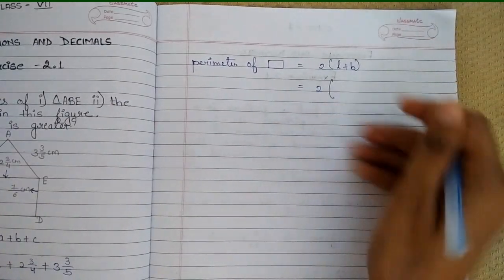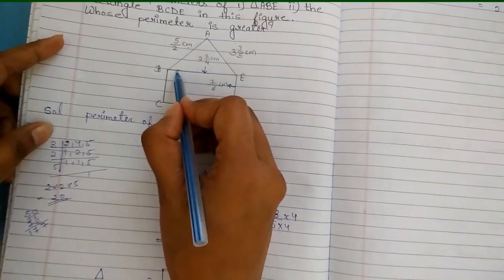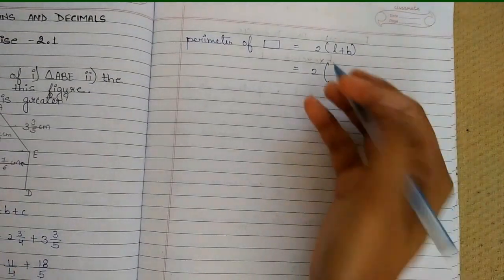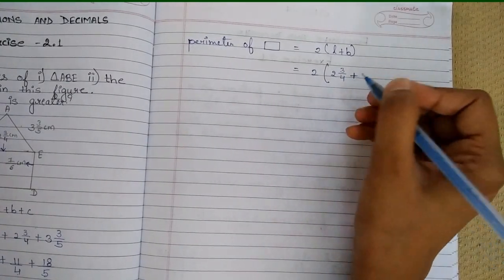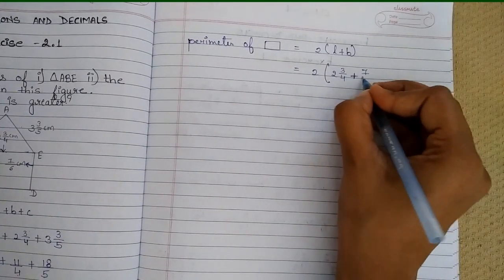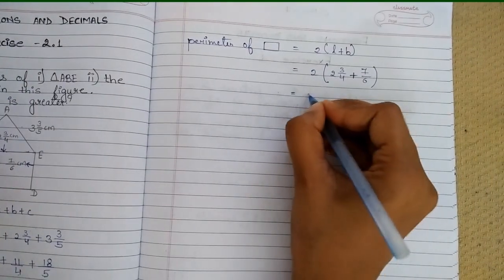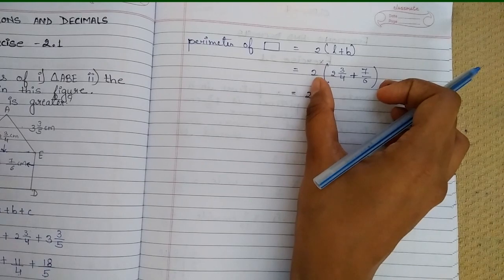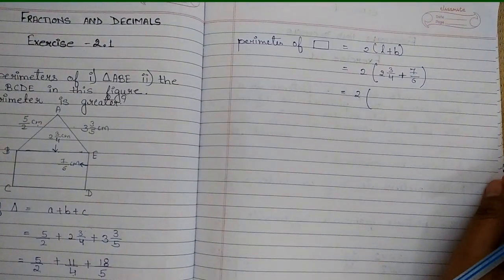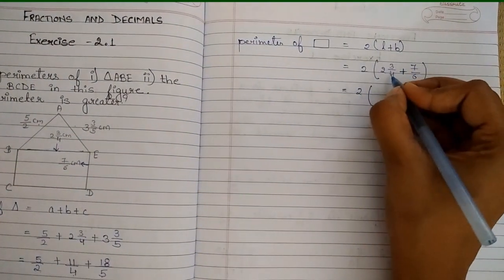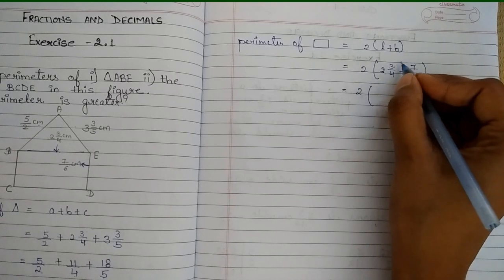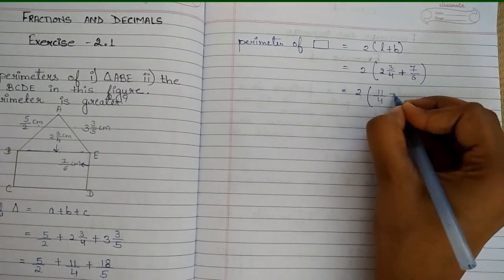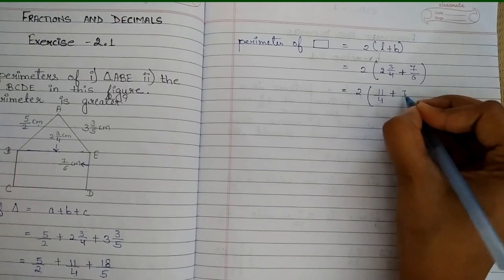Now let's look at the rectangle. The sides shown are 2 and 3/4 and 7/6. We solve the mixed fraction first: 2 times 4 is 8, plus 3 is 11, so 11/4. So for the rectangle we have 11/4 plus 7/6.